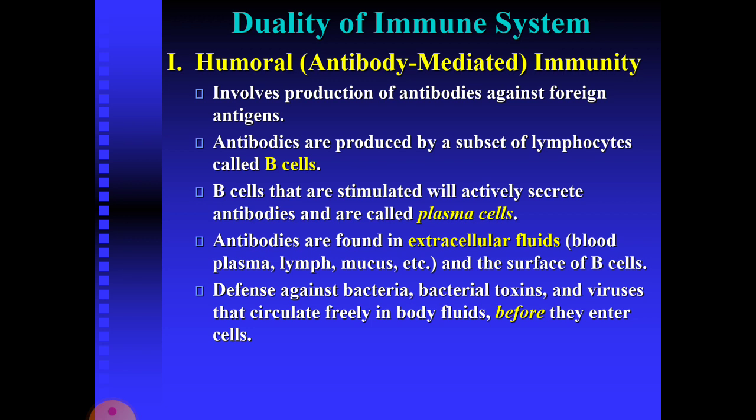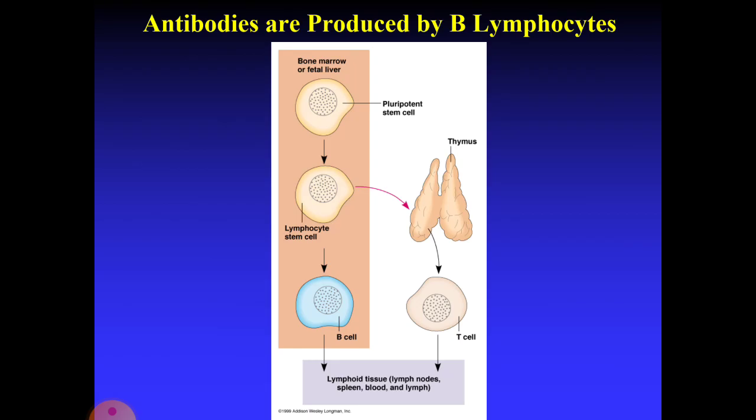Humoral immunity provides defense against bacteria, bacterial toxins, and viruses that circulate freely in the body before entering cells, and also causes certain reactions against transplanted tissues. Antibodies are produced by B lymphocytes through their proliferation. The main source of these antibodies is the bone marrow, or fetal liver in the case of a fetus. Bone marrow comprises pluripotent stem cells which are transformed into lymphocytes and then develop into B cells. These B cells circulate in lymphatic tissues including lymph nodes, spleen, blood, and lymph.